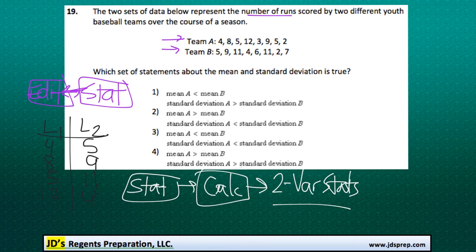And then once you do that, you'll notice that the calculator shows that the mean for the first set of data, that's our x, is 6, and then to find the mean of the other set of data that'll be using the variable y, if you scroll down you'll see it's 6.875.